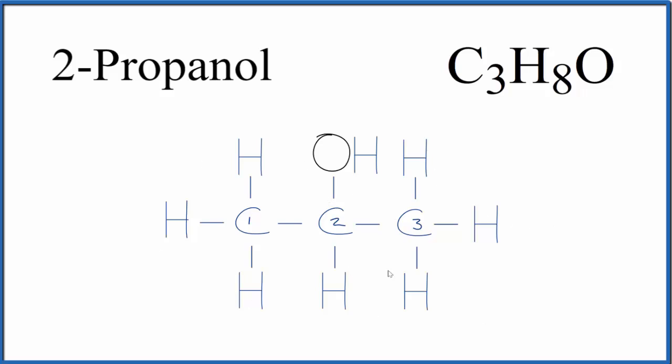So this would be the structure, the molecular structure for 2-propanol. Again, the OL tells us we have our alcohol here. We have the propane, the three carbon single bonded, and then the two tells us where our alcohol is. Sometimes you'll see this written as propane 2-ol. That's just another way to do it. And the common name is isopropyl alcohol.